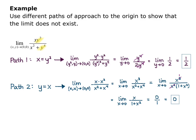So both of these paths, x equals y² and y equals x, approach the origin as (x,y) approach (0,0), but they produce different z values.